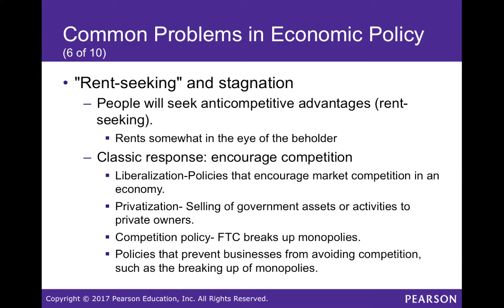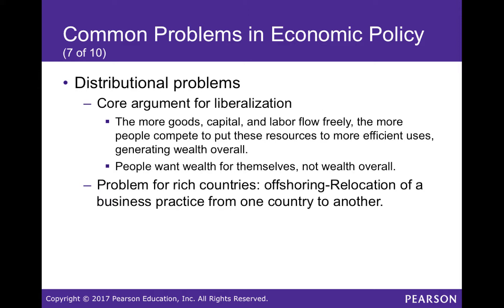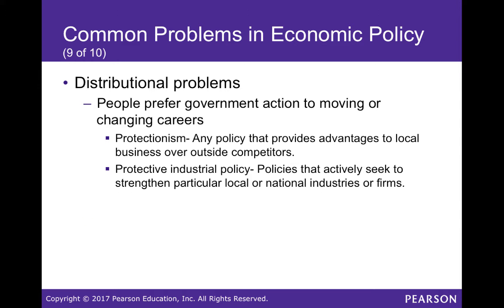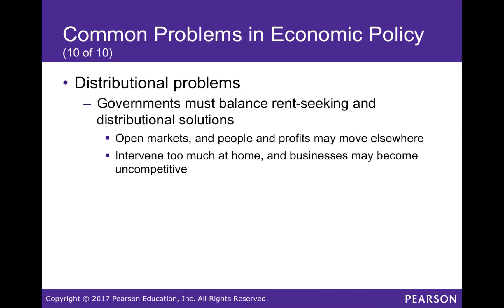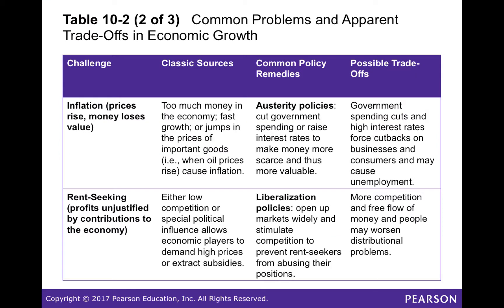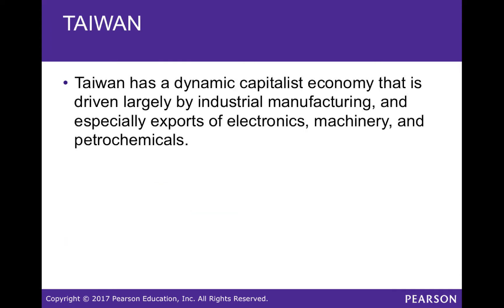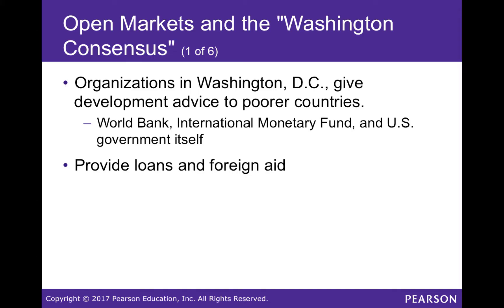Distribution problems persist — the rich become richer. People tend to prefer government action over moving or changing careers. Key terms to know include unemployment, austerity policies, liberalization policies, rent seeking, and the distribution problems that result. The book also offers a synopsis about Taiwan.